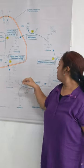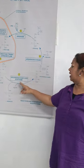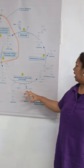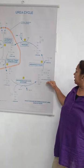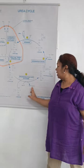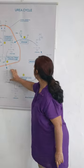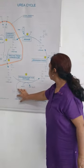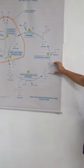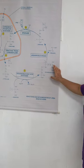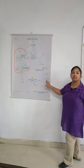Then in the presence of L-aspartate and the enzyme argininosuccinate synthase, argininosuccinate is formed with the help of inorganic phosphate. The L-aspartate group gets attached to citrulline with the removal of a water molecule, forming argininosuccinate.